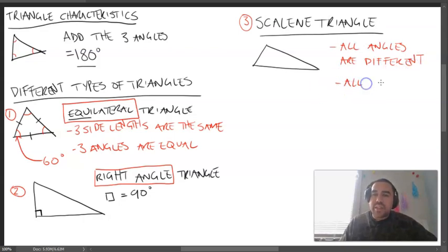And all the side lengths are also different. All side lengths are different as well. So if you get a triangle that has different lengths and different angles inside of them, it's considered a scalene triangle.